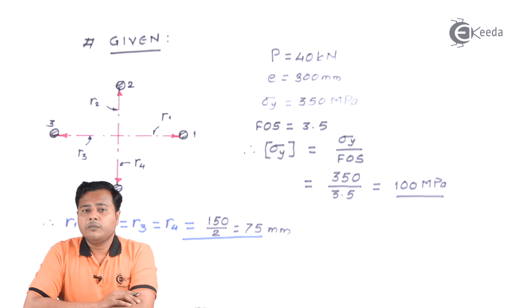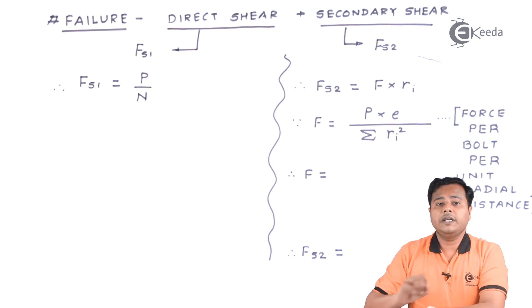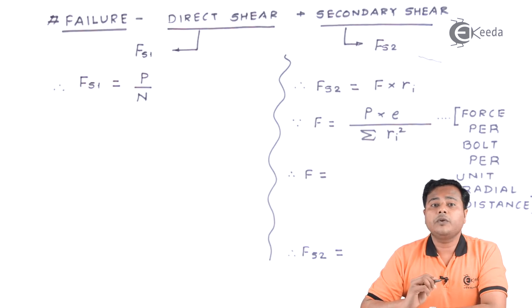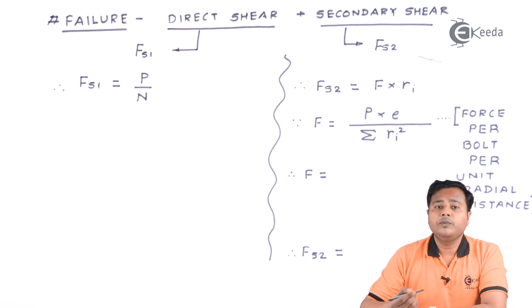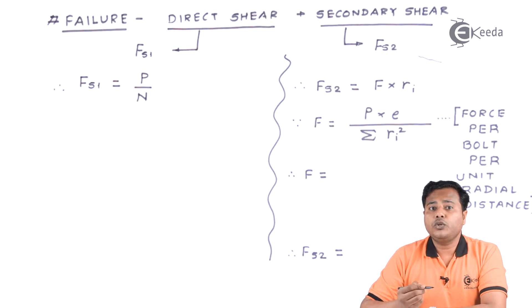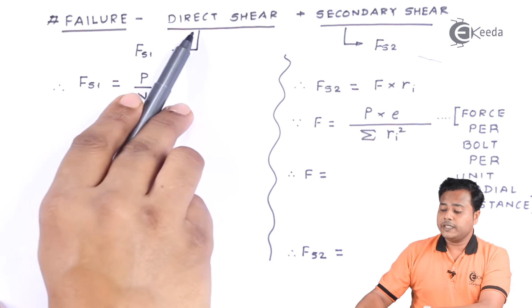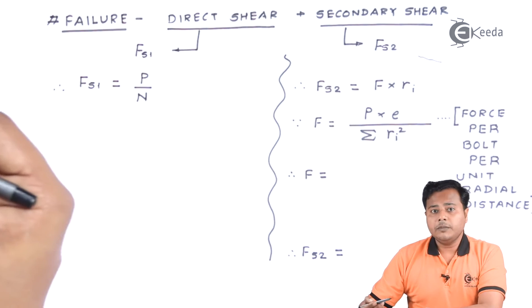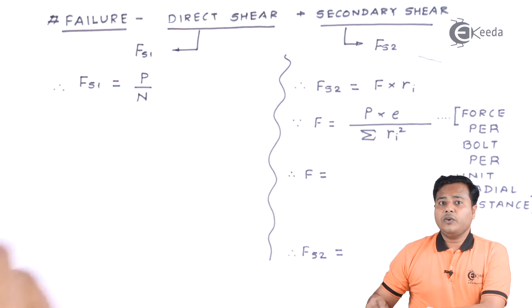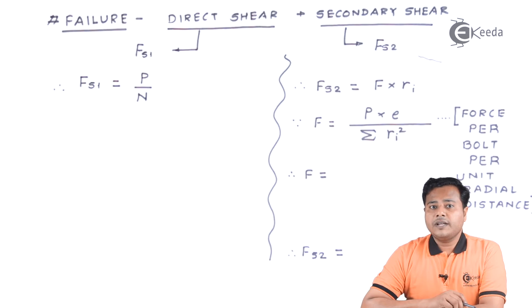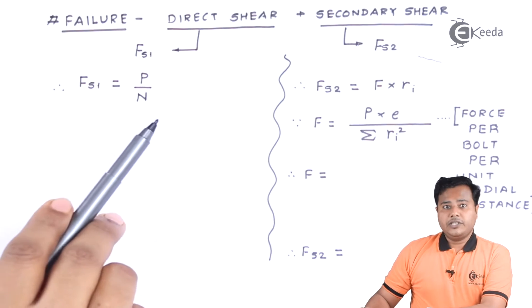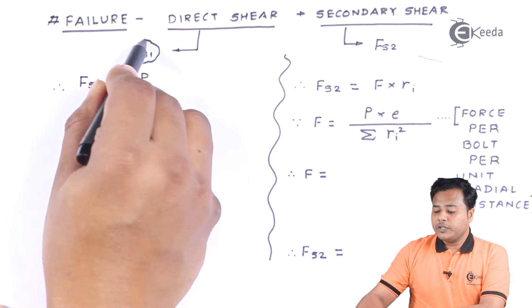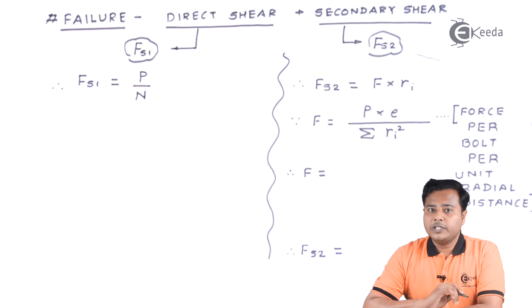The first thing we consider during design is the failure mode. Once we know the failure mode, we can finalize the design aspects. There are two ways the bolt group can fail: the first is direct shear and the second is secondary shear. We have already seen this in the second case of bolted joints, where we consider direct shear and secondary shear.